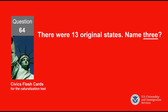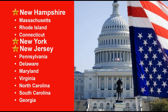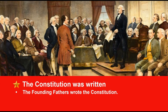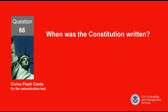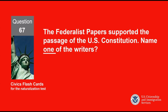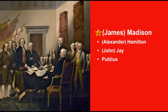There were 13 original states. Name three. New Hampshire. New York. New Jersey. What happened at the Constitutional Convention? The Constitution was written. When was the Constitution written? The Federalist Papers supported the passage of the U.S. Constitution. Name one of the writers. James Madison.